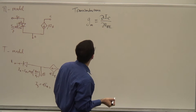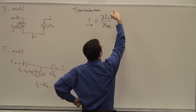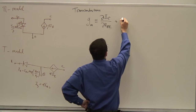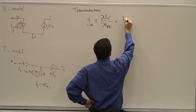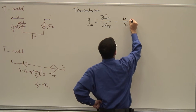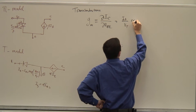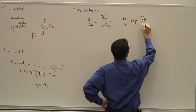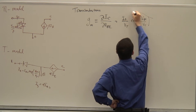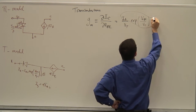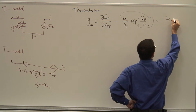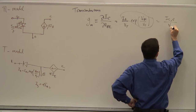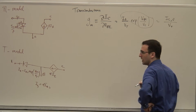What is the transconductance? You look at that expression — the same way as for the diode. What you get is basically IS/VT times e^(VBE/VT), which is nothing but the collector current at the quiescent point divided by VT. So gm = IC_Q / VT.